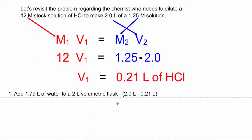We start with a flask and put some water in first, then add the acid to the water — never the other way around. Doing some basic math: our final volume is 2 liters and we're adding 0.21 liters of hydrochloric acid, so the difference is all water. Subtract the acid volume from the final volume and you get 1.79 liters — that's how much water to put in the flask.